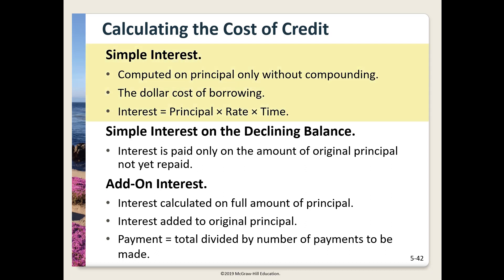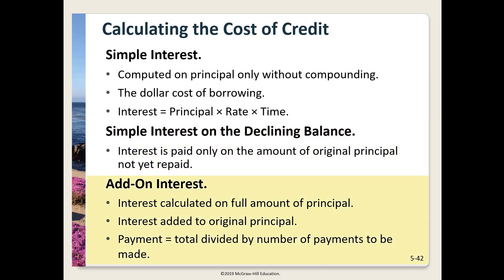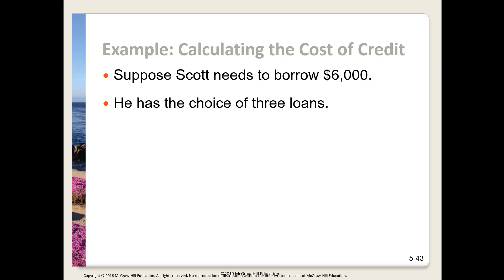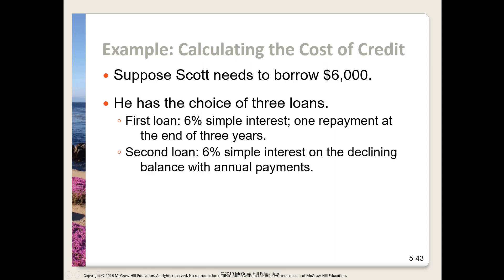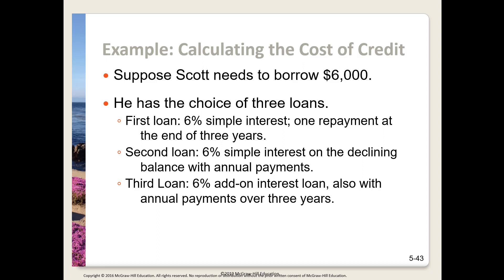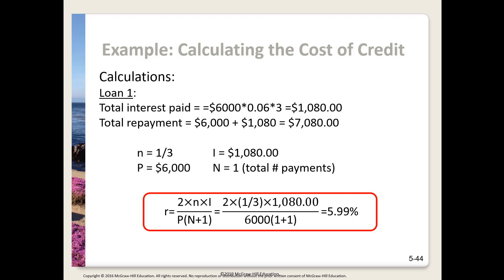There are three ways the cost of credit can be calculated. Simple interest is just that — the rate times the amount borrowed. Simple interest on the declining balance is interest charged only on the remaining amount outstanding. Add-on interest is interest calculated on the original total and added onto the balance before the periodic payment is calculated. Scott needs $6,000 and has three options: option one is 6% simple interest, three-year term, lump-sum payment; option two is 6% interest on the declining balance, three years, annual payments; option three is 6% add-on interest, three years, annual payments. Using simple interest: $6,000 × 0.06 × 3 = $1,080 total interest. The effective rate using the approximation formula is approximately 5.99%.